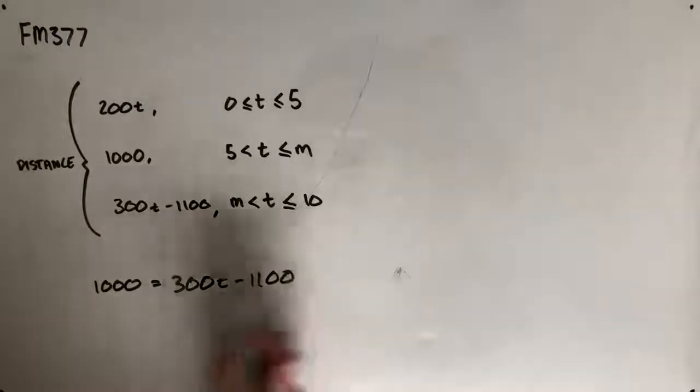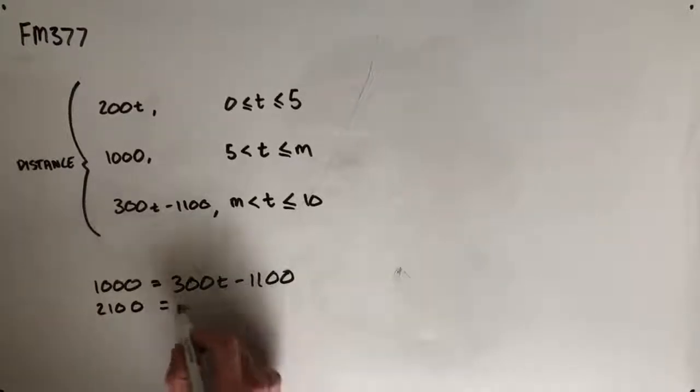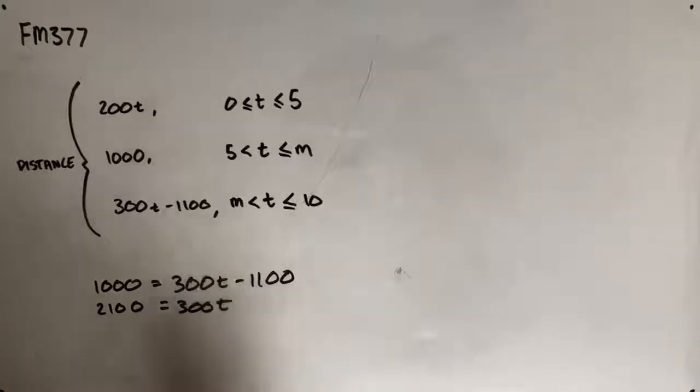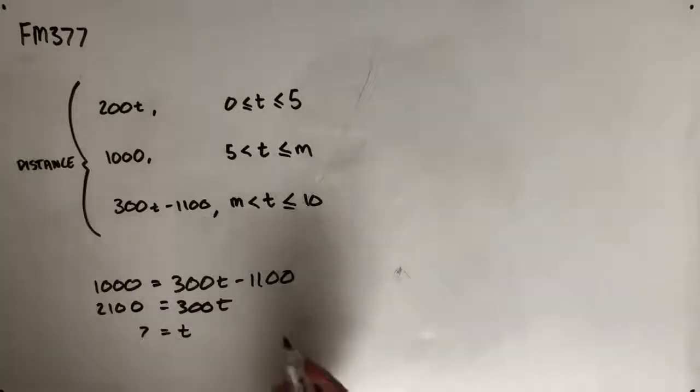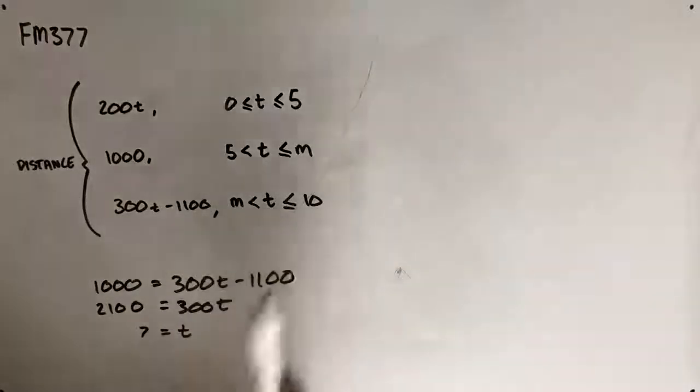From here, if we add 1,100 to both sides, we get 2,100 is equal to 300t. And if we divide both sides by 300, we should get that 7 is equal to t, meaning that between 5 and 7 minutes, she has a break, and then from 7 to 10 minutes, she's riding at 300 meters per minute.